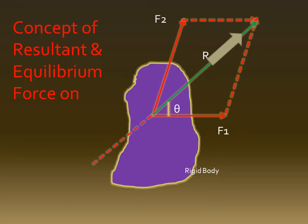This resultant gives the same effect on the rigid body as F1 and F2 together, and the body moves in the direction of the resultant. To keep the rigid body in a stable, equilibrium, or rest condition, the equilibrium force acts opposite to the resultant force. The angle theta is measured from the horizontal axis.